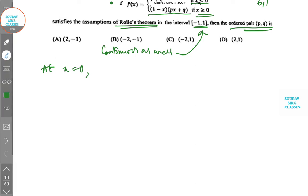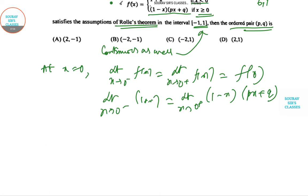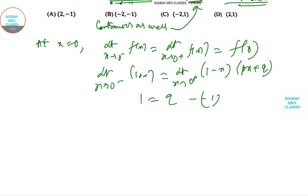Now at x equal to 0, at x equal to 0 doesn't mean it's origin. F of x is limit x plus F(x) equal to F of 0. Limit x tends to 0 minus 1 plus x, limit x tends to 0 plus 1 minus x and this part is Px plus Q into 1 minus x. So we can write 1 equal to Q.